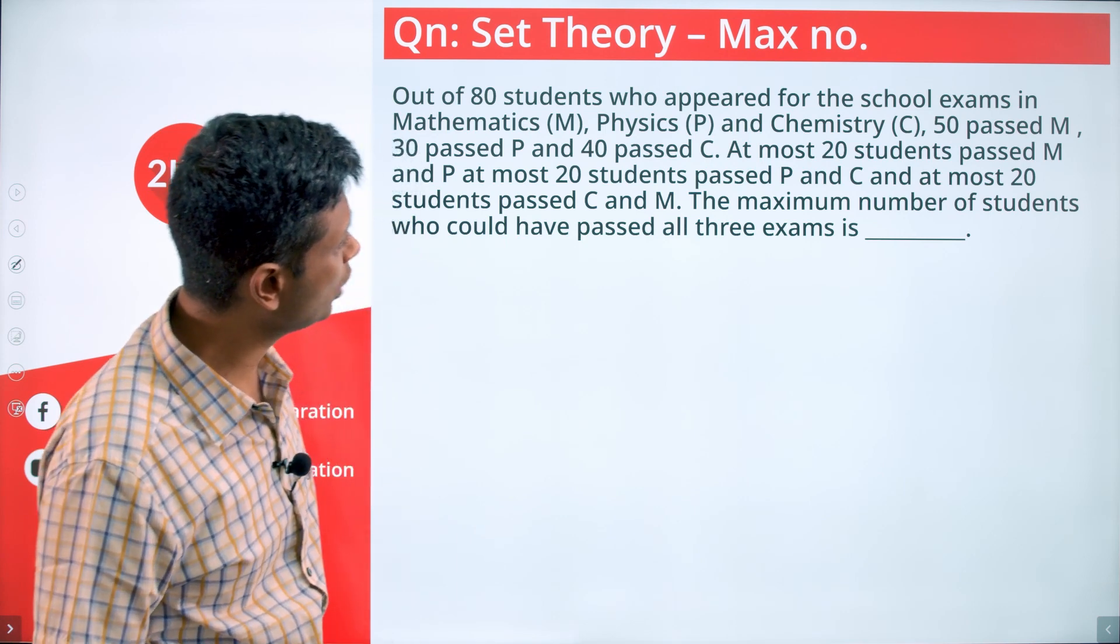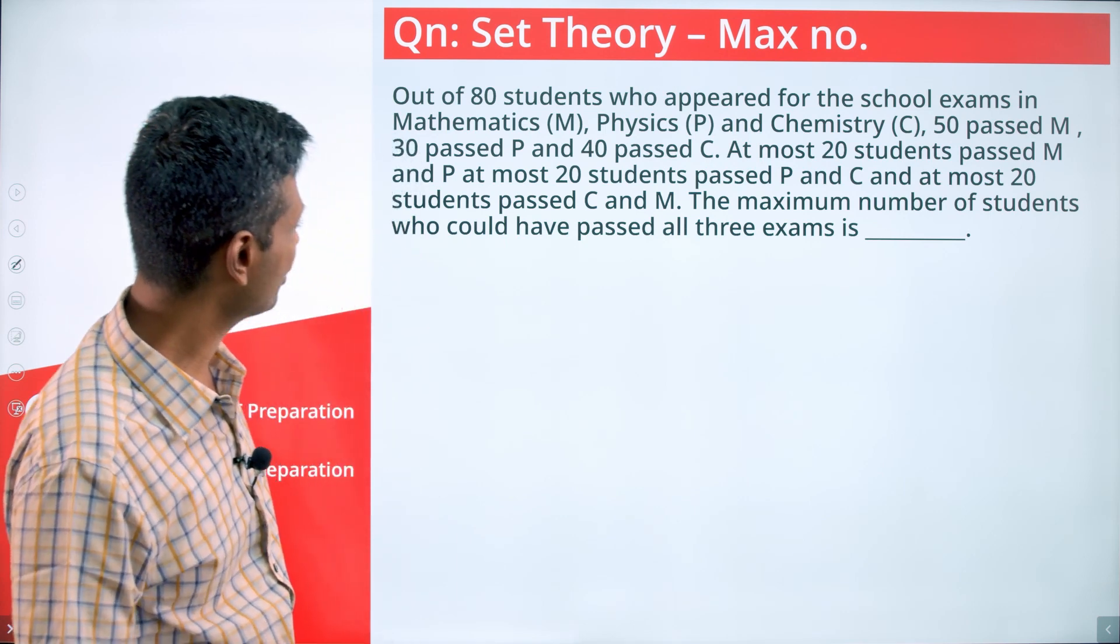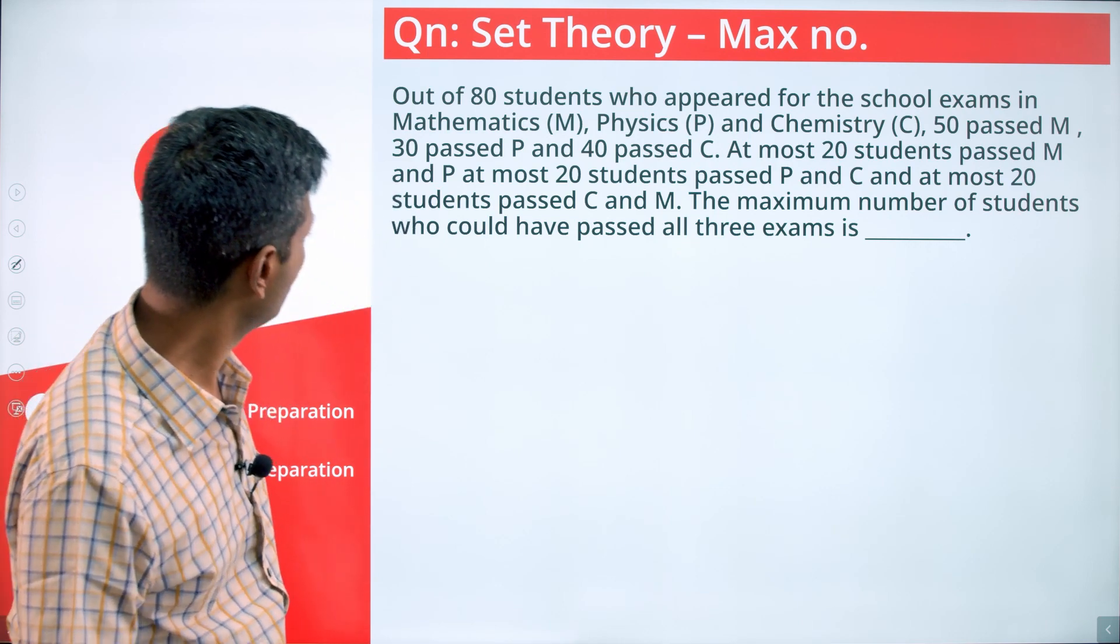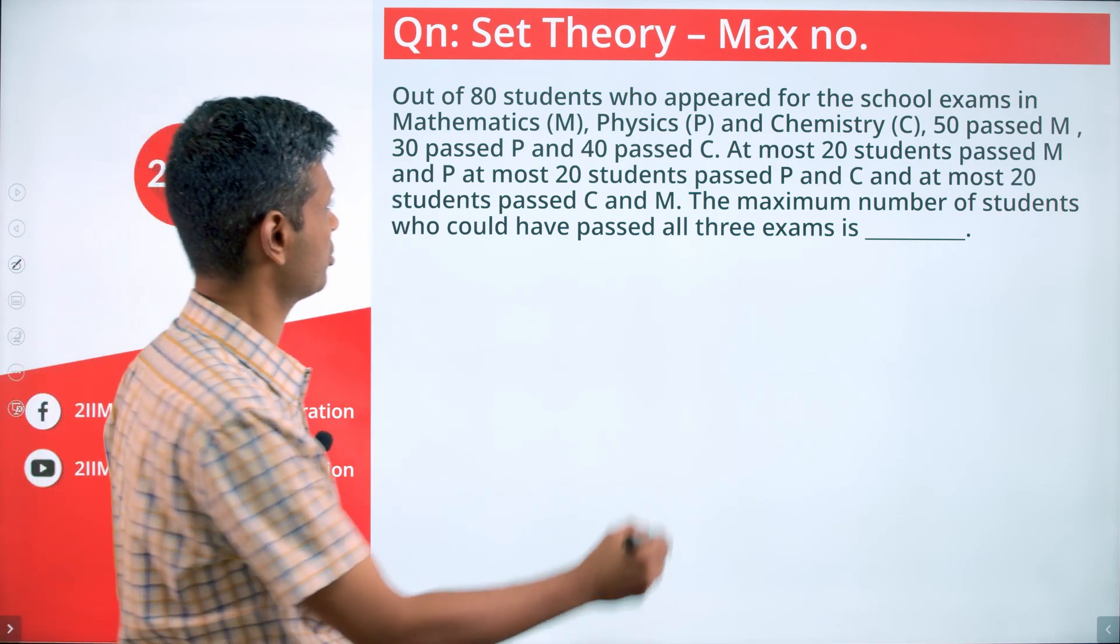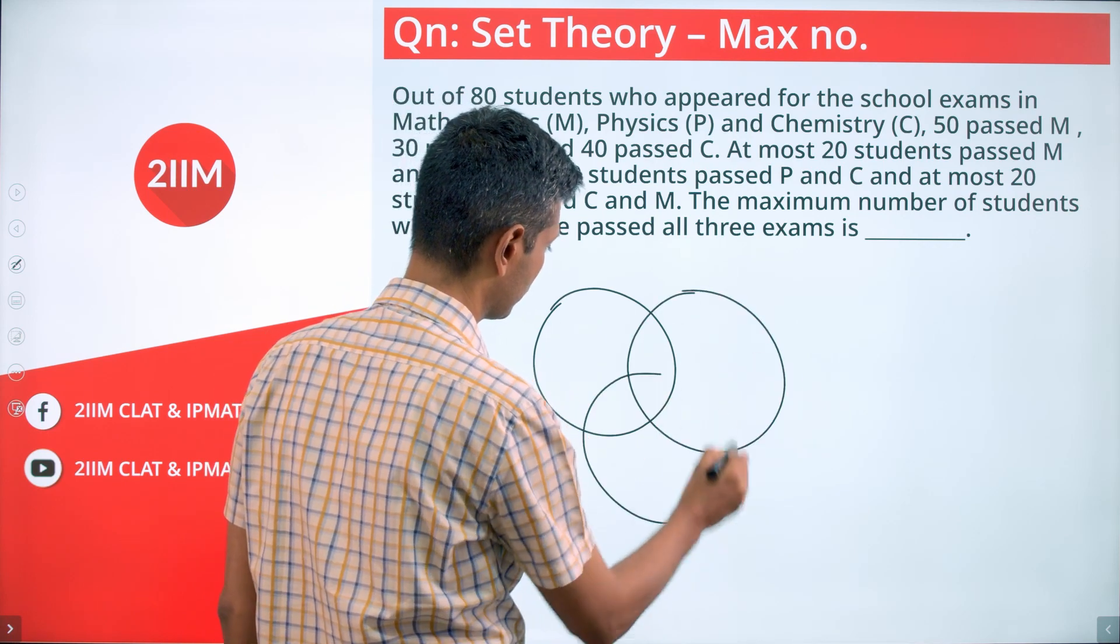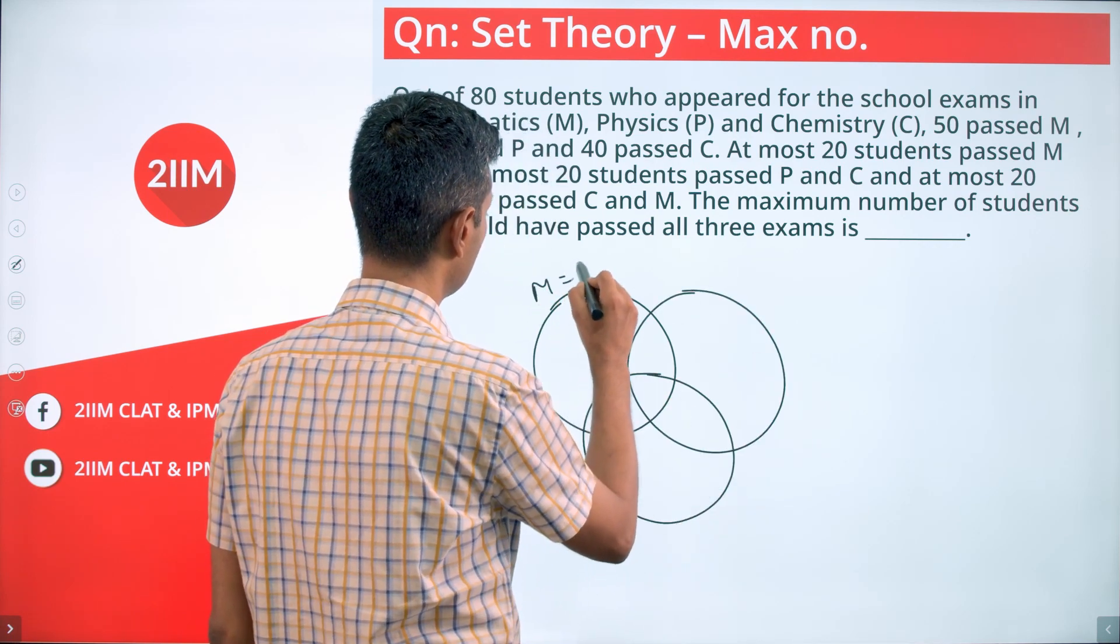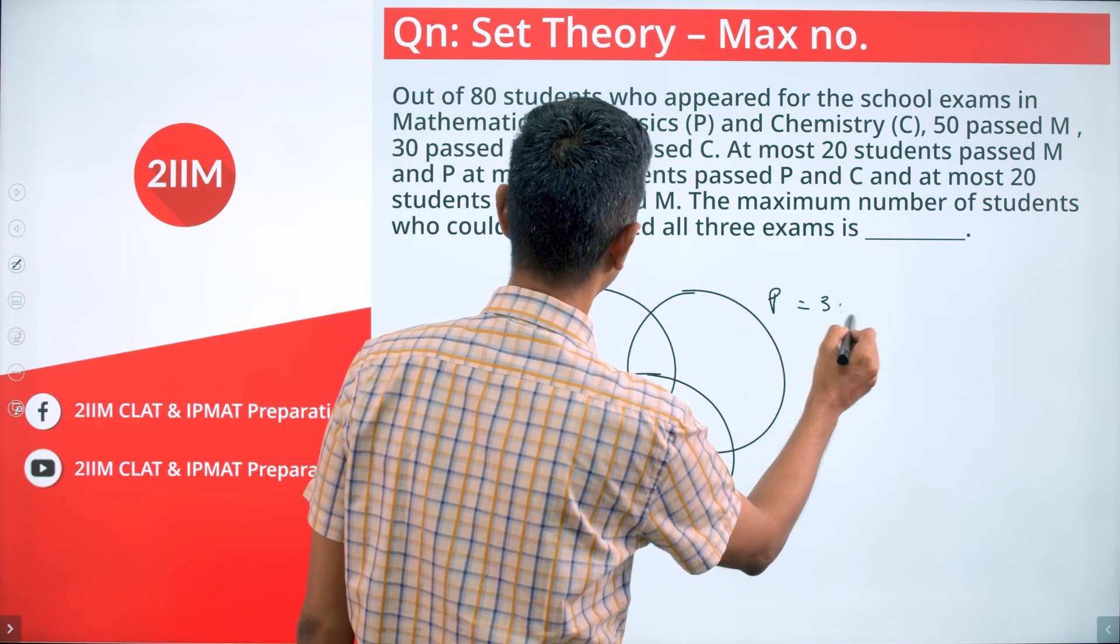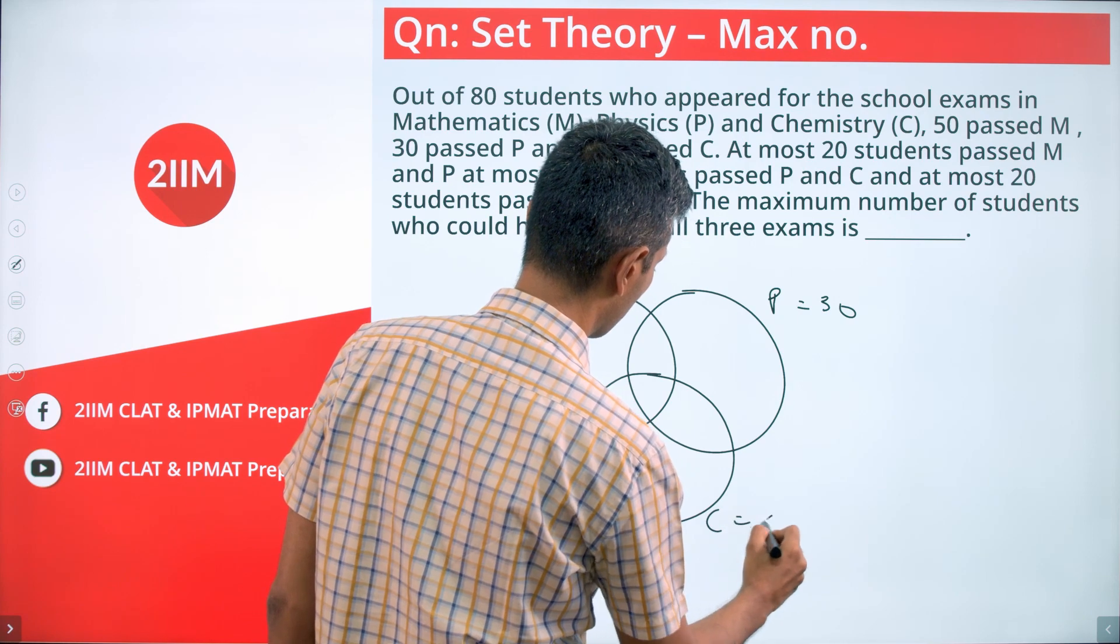Out of 80 students who appeared for the school exams in Math, Physics, and Chemistry, 50 passed Math, 30 passed Physics, and 40 passed Chemistry. It's like a classic set theory question. Math is 50, Physics is 30, Chemistry is 40.